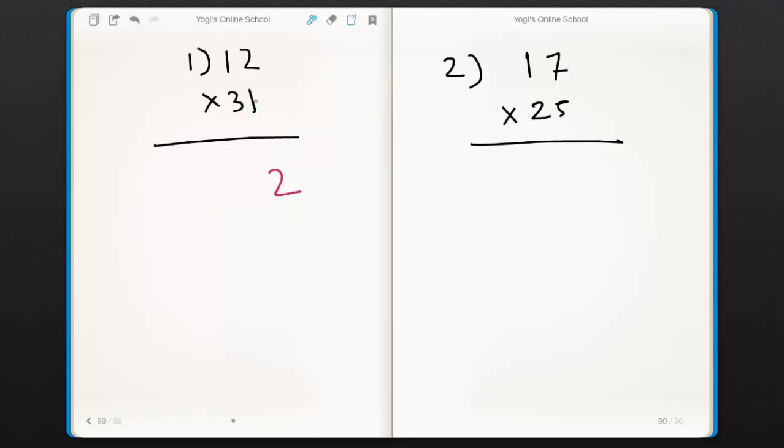Now second step is cross multiplication. That is 1×1 is 1, 3×2 is 6. Add both numbers we get 7.